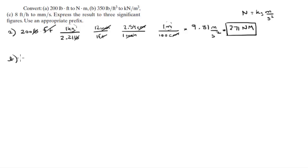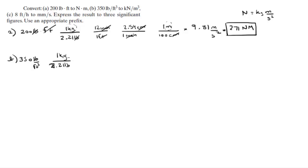The second problem is a density conversion: 350 pounds per cubic foot needs to be converted into kilonewtons per cubic meter. First, get rid of the pounds — in 2.21 pounds there is one kilogram — and to go from kilograms to Newtons you multiply by 9.81 meters per second squared.